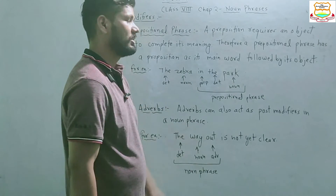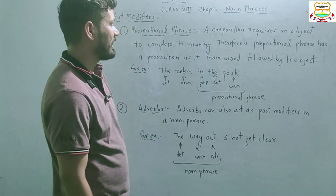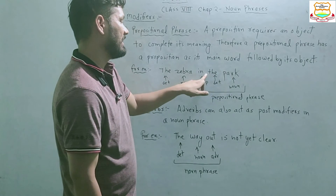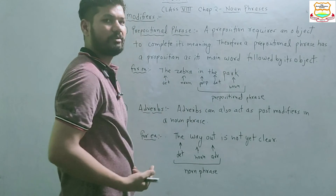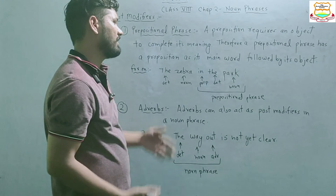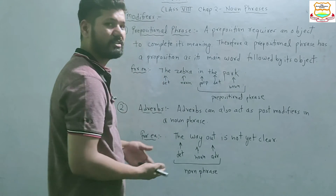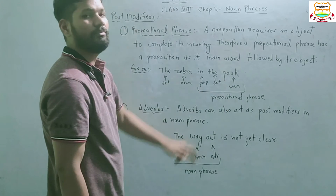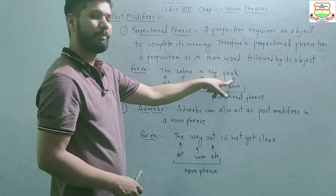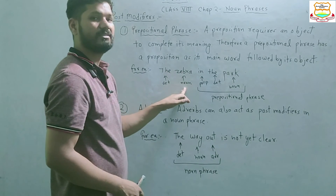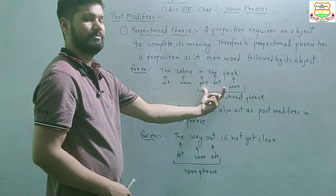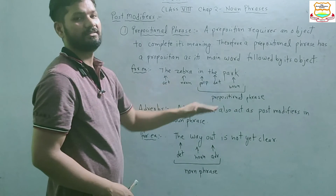This is the post-modifier; it comes after the noun. You may notice there is also a noun 'park' and that 'in the' comes before it. You might think 'in the' should be a pre-modifier to 'park'. However, in this sentence it is a post-modifier because, although 'park' is a noun, the head or main noun we are talking about is 'zebra', not 'park'. That's why 'zebra' is the main word and 'park' is part of the prepositional phrase.